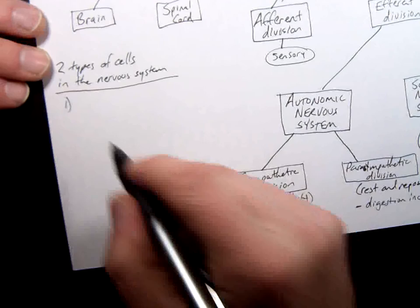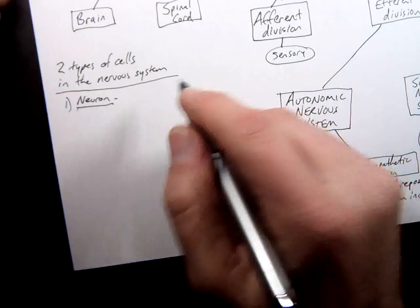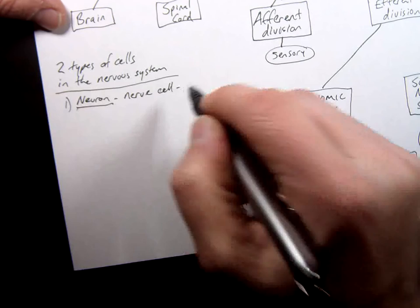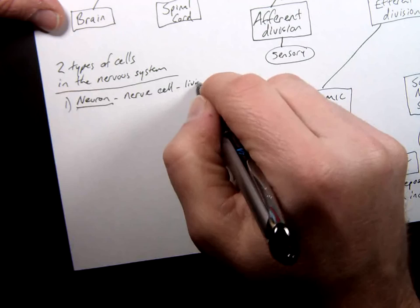Now there's a dozen different types of cells in the nervous system but what I'm saying here is they're going to all fit into one of two categories. It's either going to be a neuron. A neuron is nothing more than a nerve cell which is the living wire.